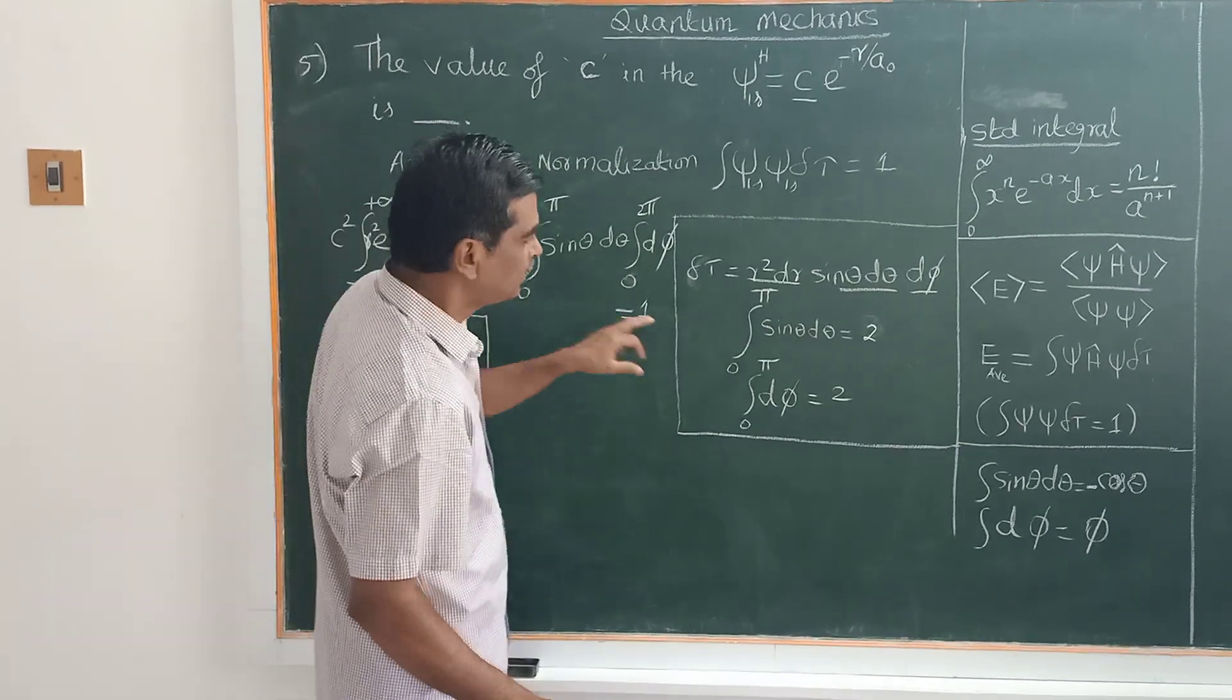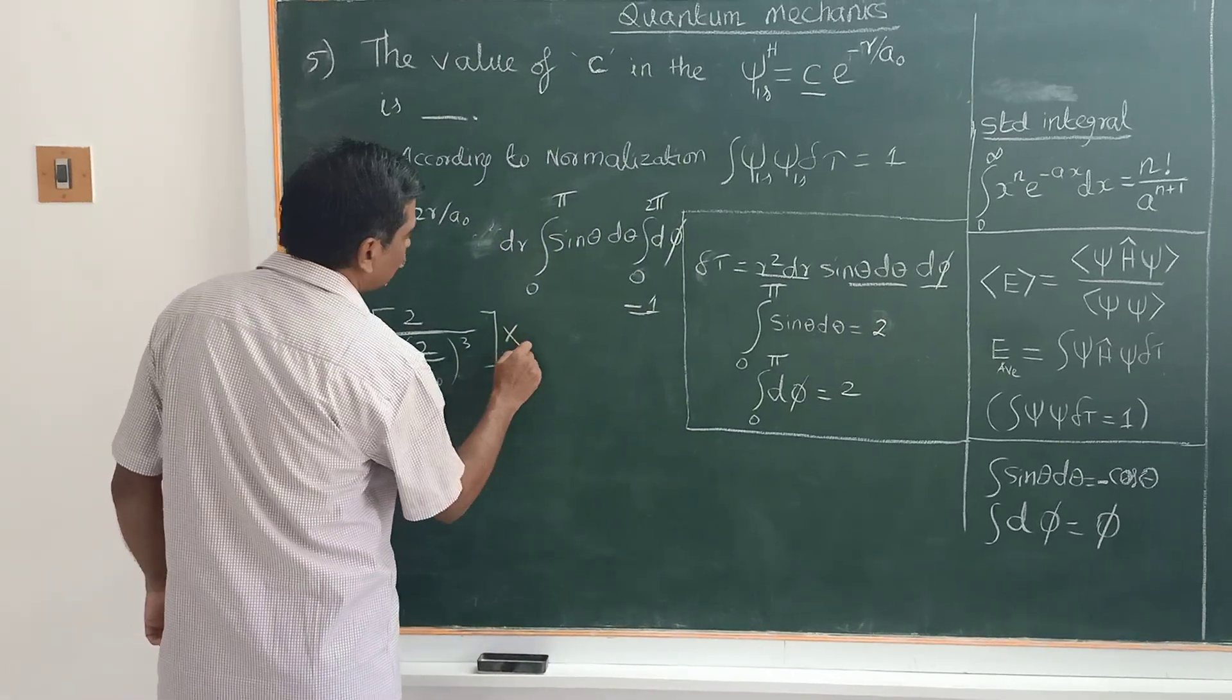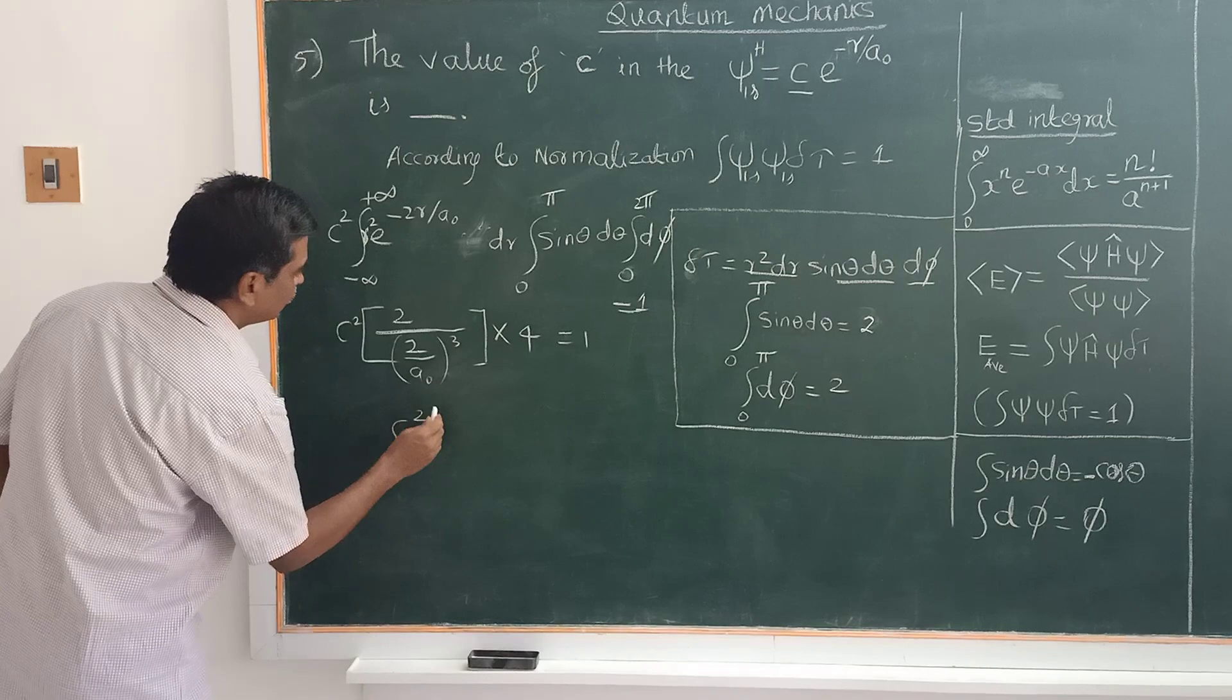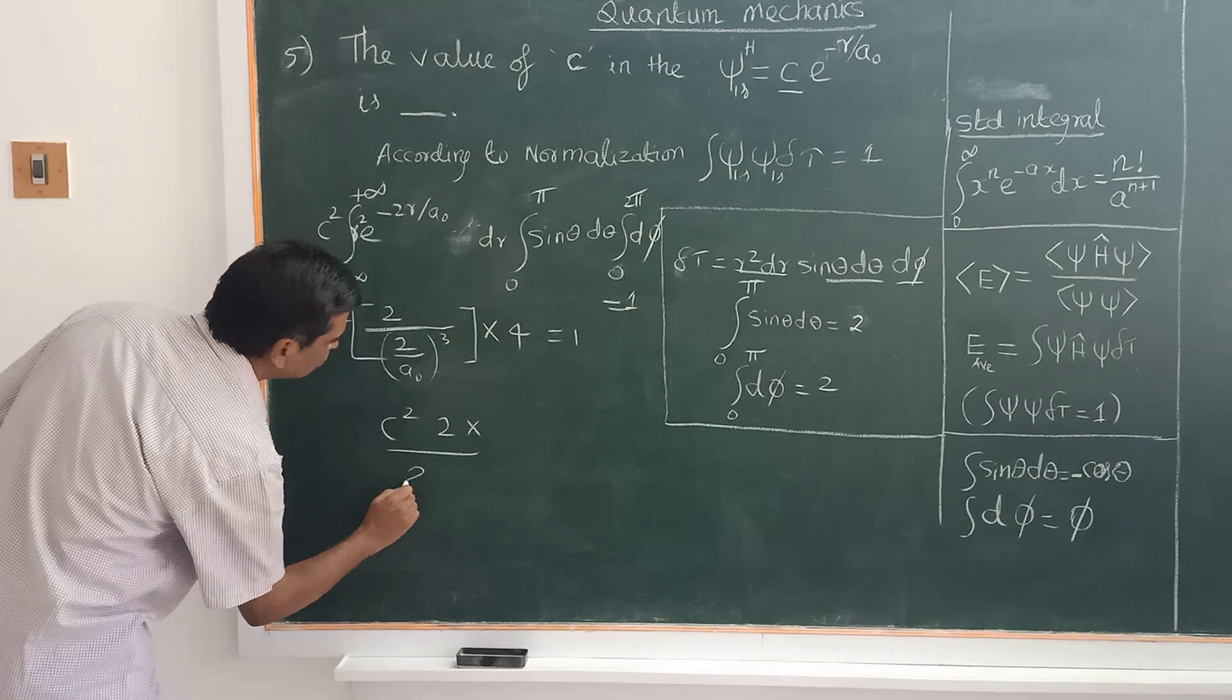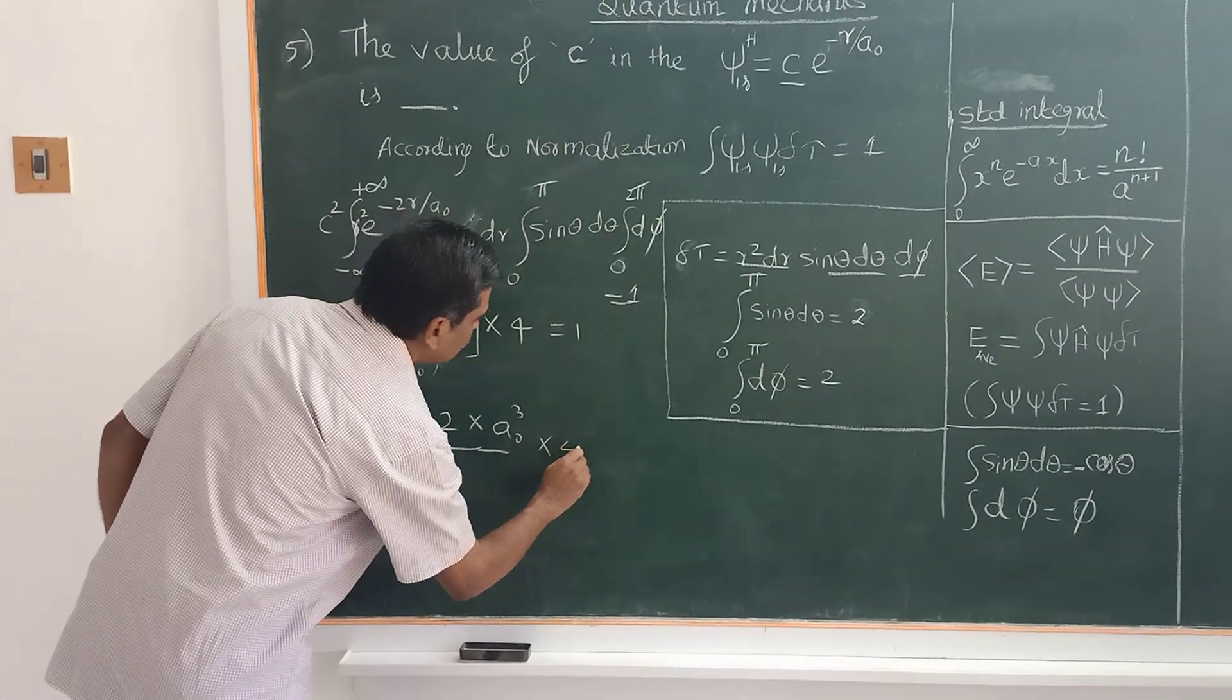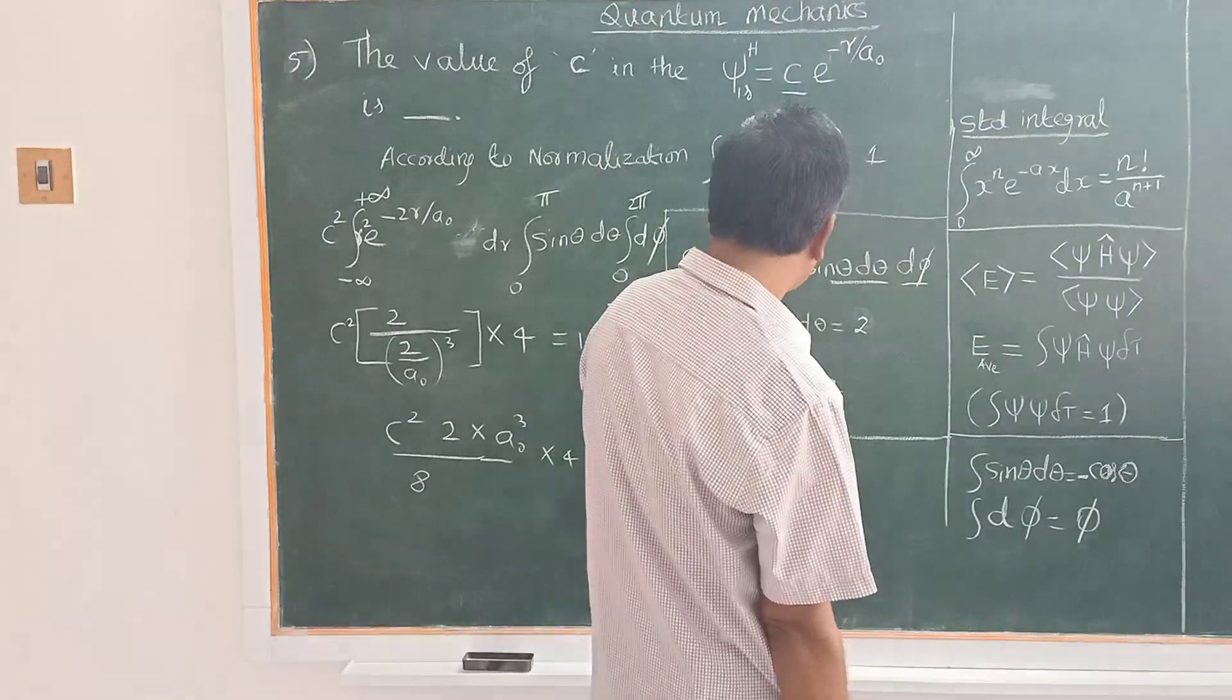And this integral value I have evaluated here. The integral sin theta d theta equals 2, and similarly d phi equals 2 pi, therefore equal to 4 pi equals 1. And next you will get C squared 2 divided by 8 and a naught cubed will be multiplied into 4 pi equals 1.